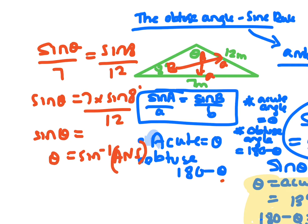Once you've done that, also look at the angle if it was obtuse. So we go 7 times sine 8 divided by 12, we get 0.081. If we go shift sine answer, you end up with 4 degrees 39 minutes.